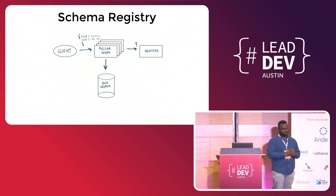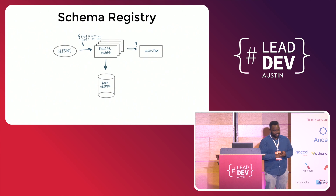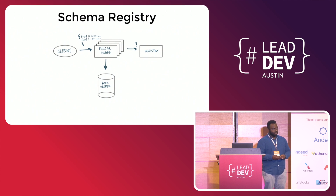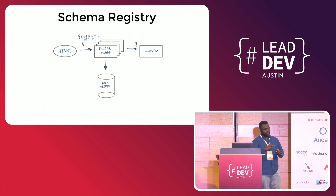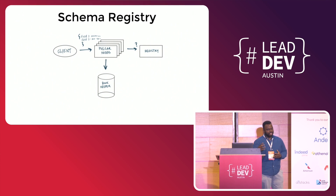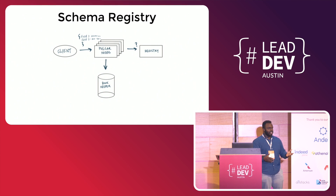Next, schema registry. The schema registry is important because not understanding the data coming through your streaming system can cause a lot of problems, including tons of downstream issues. As architectures built on top of these systems grow more complex, this requires more care. The way Pulsar's schema registry works is there's a separate modular process that tracks schemas. Before data is written permanently to Bookkeeper, it gets checked. And instead of throwing data away if it doesn't meet the schema, it creates another permanent storage for that data — so if you need to switch over, you won't lose any of it.